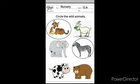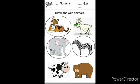Next animal is elephant. Elephant is a wild animal, so we will circle the picture. Next animal is cow. Cow is not a wild animal — cow is a farm animal. So, we will not circle the picture.